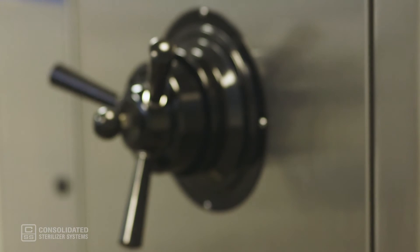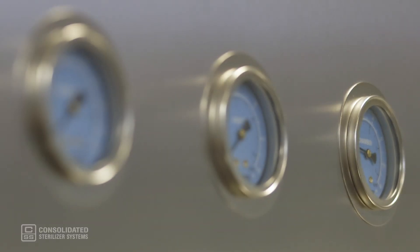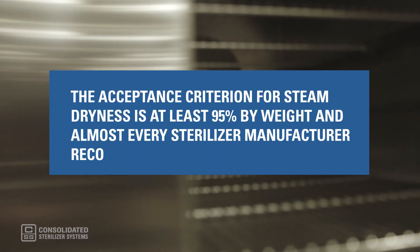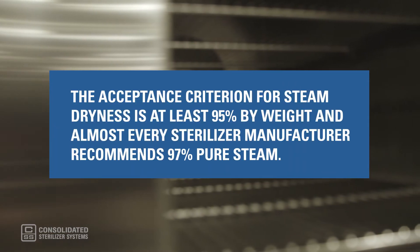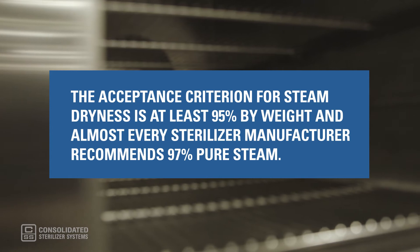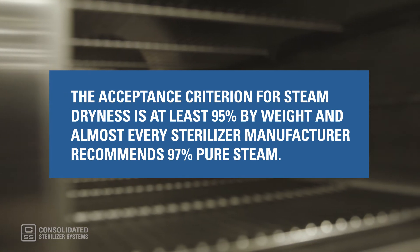Steam dryness is calculated by measuring the temperature change in a known amount of water in relation to the mass of steam that is required to cause that temperature change. Because the dryness value of the steam at the chamber entry point can be a bit lower than the dryness value in the sterilizer, measurements of steam dryness should be made at both locations. The acceptance criterion for steam dryness is at least 95 percent by weight, and almost every sterilizer manufacturer recommends 97 percent pure steam. In reality, a dryness level as low as 90 percent is considered acceptable for laboratory autoclaves. Steam dryness values below 90 percent, however, are considered to be wet steam, which does not deliver as much energy to the load.